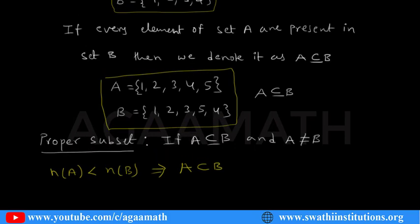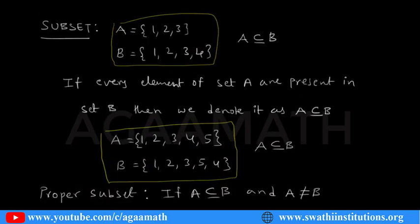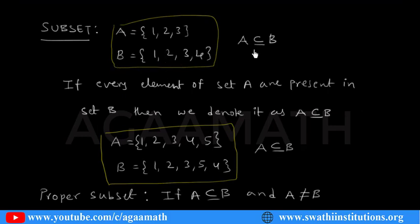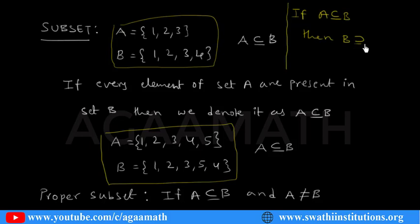We also have one more type — the superset. Remember: if A is a subset of B, then B is said to be a superset of A. So if A is a subset of B, then B is a superset of A. Let us now discuss more about subsets and proper subsets.